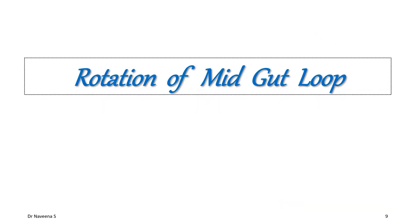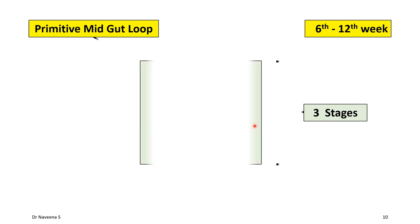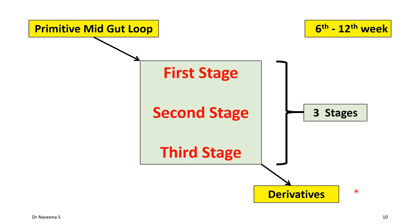Now let's move on to the next objective: rotation of the midgut loop. Further changes seen in the primitive midgut loop during the 6th to 12th week of development can be studied in three stages. By the end of the 12th week, the primitive midgut loop gives rise to its definitive derivatives after passing through three successive stages of development.